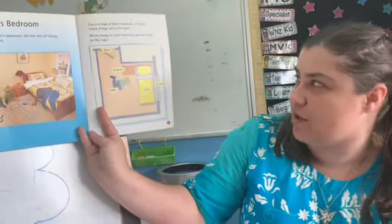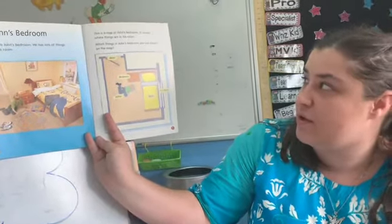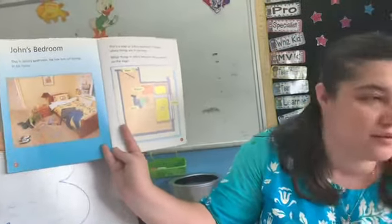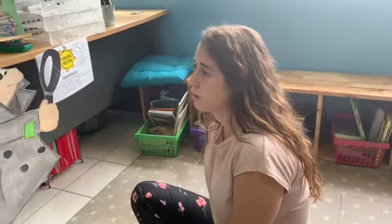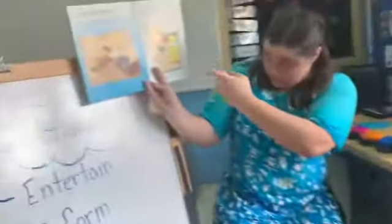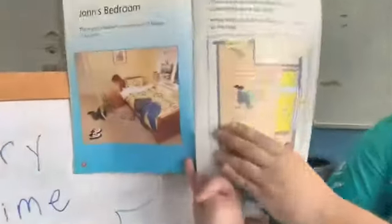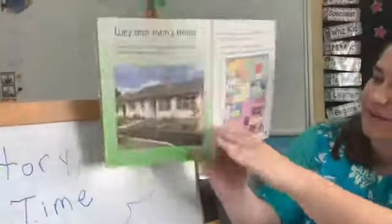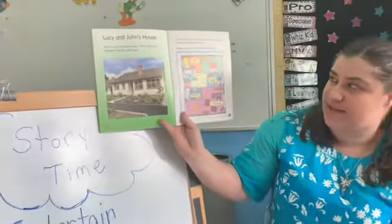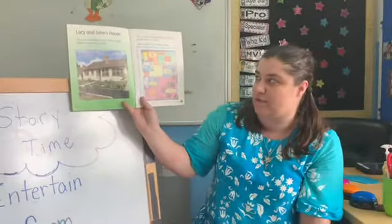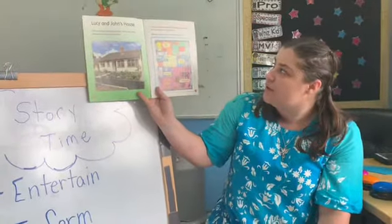This is John's bedroom. He has lots of things in his room. This is a map of John's bedroom — it shows where things are. Which things in John's bedroom are not shown on the map? I don't see the puzzle he's making on the floor. That's right, or his clothes, or his shoes. His room looks much neater in the map!